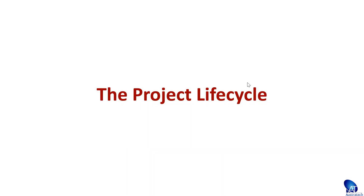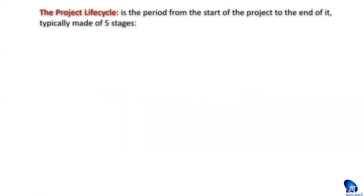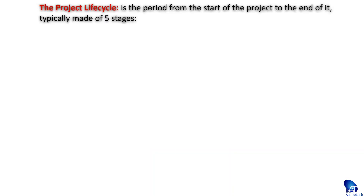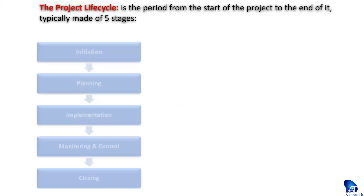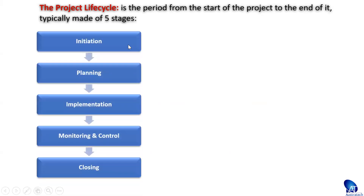The project life cycle is the period from the start of the project to the end of it. It is typically made up of five stages: the initiation stage, planning, implementation, monitoring and control, and closing.